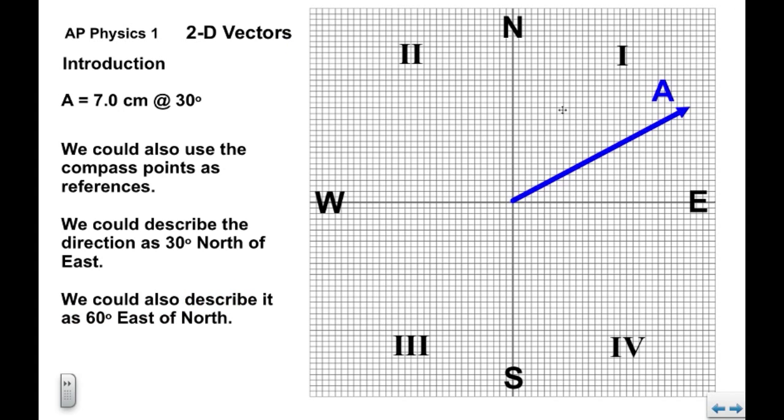We could also use the compass points. We could say that it's seven centimeters at 30 degrees north of east. We could also describe it as seven centimeters at 60 degrees east of north.